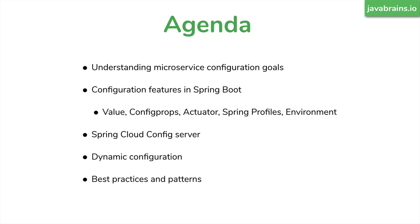Then we're going to switch to Spring Cloud Config Server, which is a Spring Cloud project that lets you externalize your configuration and manage it in real time. After that, we're going to look at dynamic configuration — how you can have configuration update in real time so that you don't have to restart the servers or deploy new stuff to production in order to update configs. We'll wrap up by looking at some best practices and patterns and how to effectively use all the tools covered in this course.